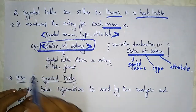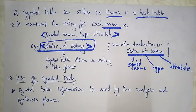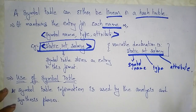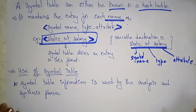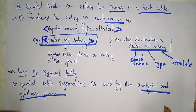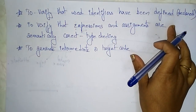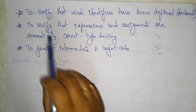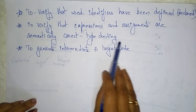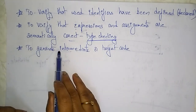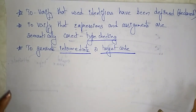When the compiler inserts any value into the symbol table, it stores the information as symbol name, type, and attribute. The symbol table information is used by both the analysis and the synthesis phases — to verify that used identifiers have been defined or declared, to verify that expressions and assignments are semantically correct through type checking, and to generate the intermediate or target code. These are the different uses of the symbol table.